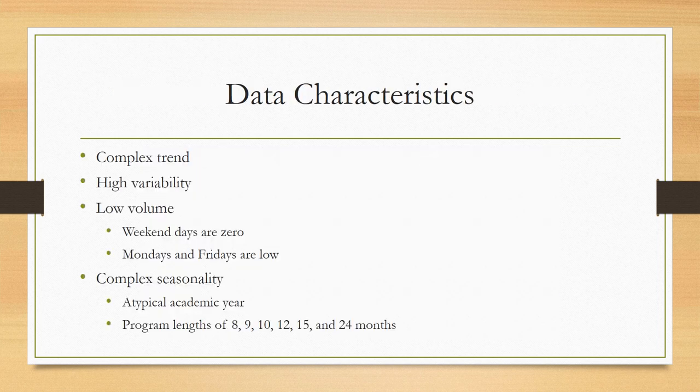The characteristics of the data are complex. We have data not from a single product or single location, but from a variety of different programs in different locations that don't necessarily match up other than an overall academic calendar. The trends are complex and not clear — highly variable based on the month, the day, and the week. With daily data, there's often very low volume; Mondays and Fridays tend to be very low. There is also great seasonal complexity with an atypical academic year and program lengths varying from 8, 9, 10, 12, 15 to 24 months.